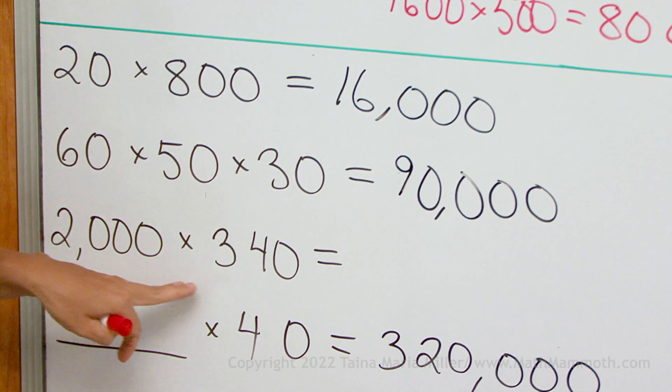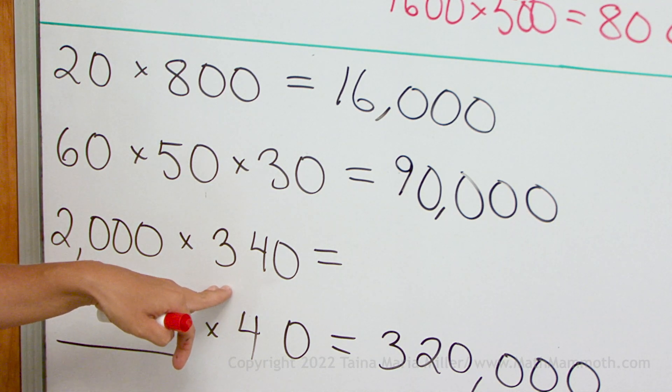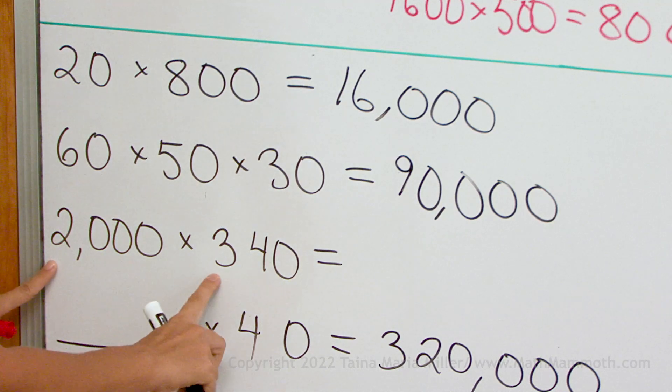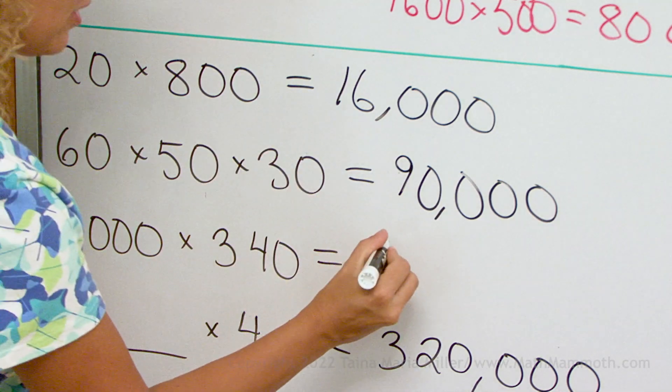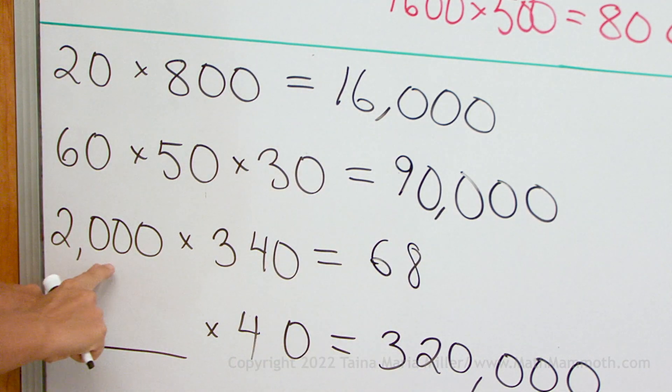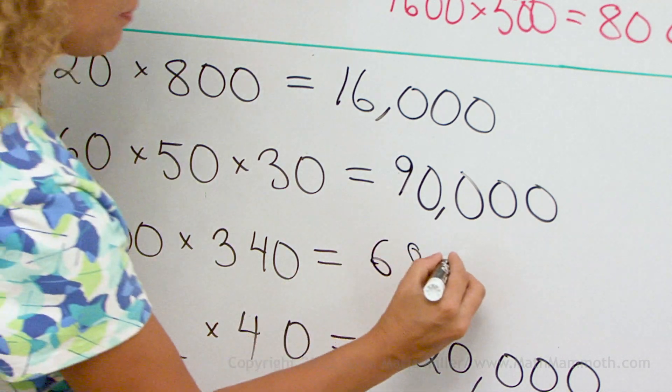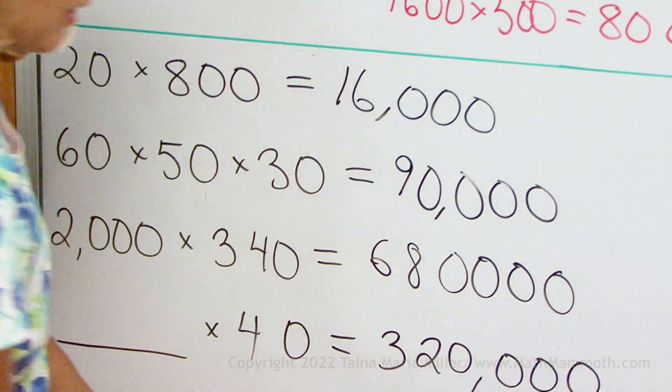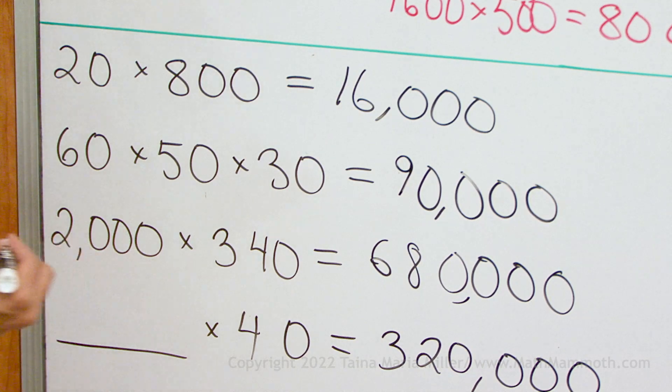How about 2,000 times 340? It's easy. 2 times 34, 68. And then 4 zeros. So we get 680,000.